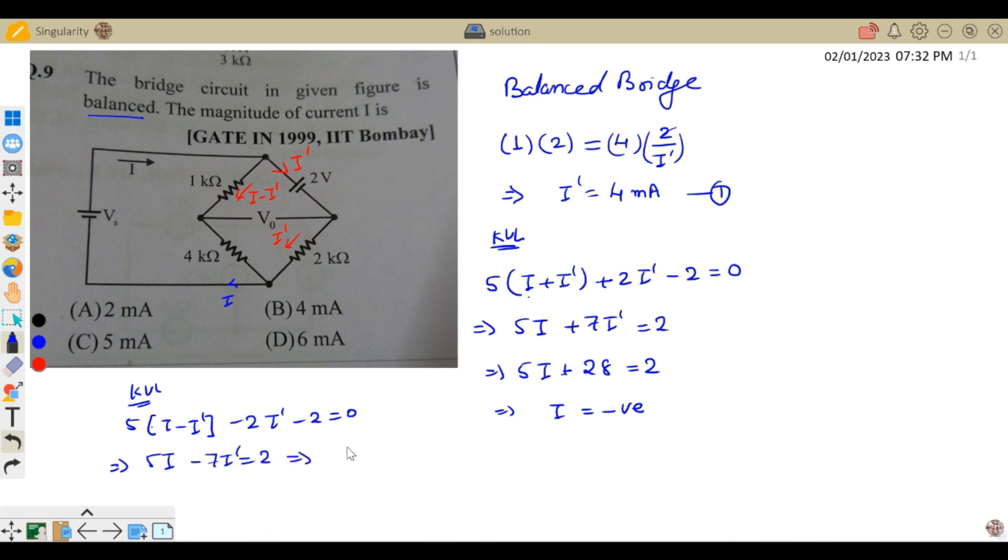5I = 2 + 7I'. I prime is already 4 mA, so 7 times 4 mA is 28 mA. 5I = 2 + 28 = 30 mA. Therefore I = 6 mA. Answer is 6 mA, which is the right answer for this question.